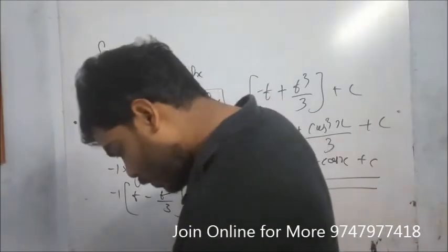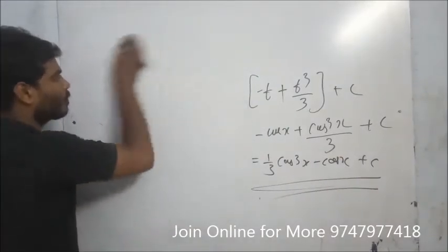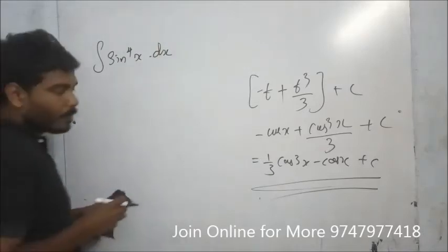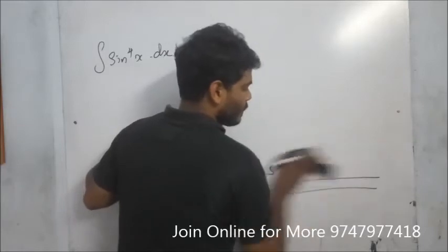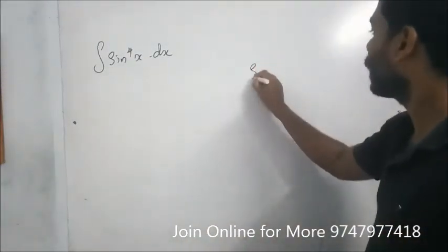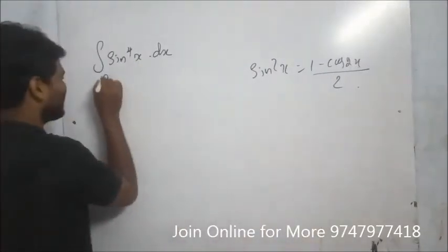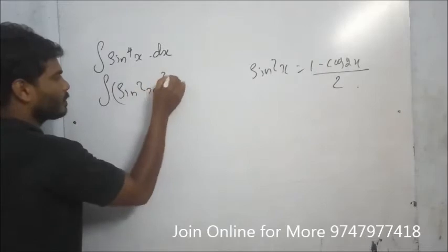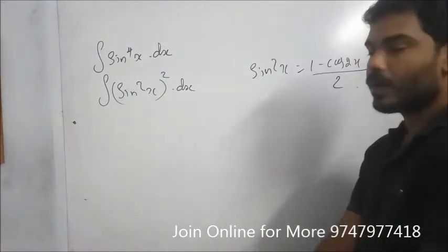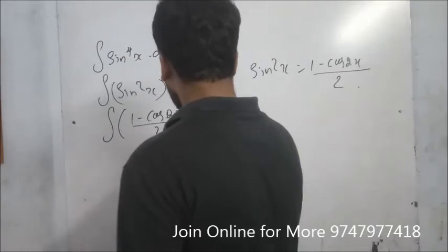For integral of sin⁴x dx, we write sin⁴x as (sin²x) squared. Using the formula sin²x equals (1 minus cos2x) divided by 2, the integral becomes the integral of [(1 minus cos2x) divided by 2] squared dx.